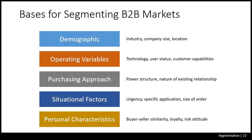Segmenting business markets revolves around many of the same aspects as consumer markets: demographics, operating variables, purchasing approach, situational factors, and personal characteristics. For example, a rubber tire company can sell tires to manufacturers of automobiles, trucks, farm tractors, forklifts, aircraft, and more. Within a chosen target industry, it can further segment by company size and set up separate operations for selling to large versus smaller customers.